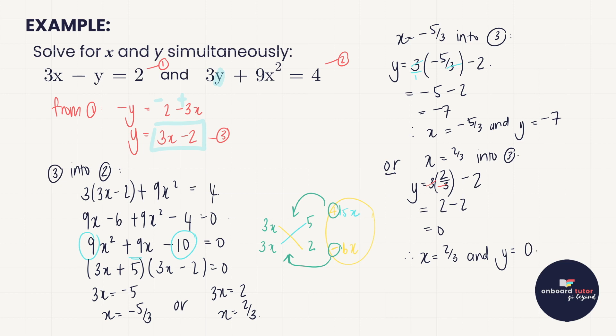You see how if you follow the steps you can't really go wrong. It's about choosing a simpler equation, getting one variable on its own, substituting into the equation you haven't used yet, solving, and then don't forget — a lot of students stop here. They forget we're solving simultaneously for both variables. So go back and substitute your answers to get your final answers for the second variable.